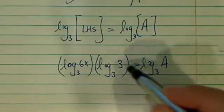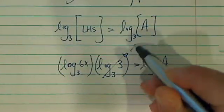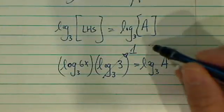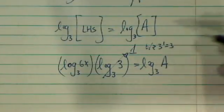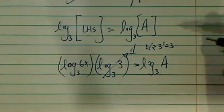And then log base 3 of 3 does not cancel, but it does equal to 1. The reason it's equal to 1 is because 3 to the 1 is equal to 3. That's how we use logs.